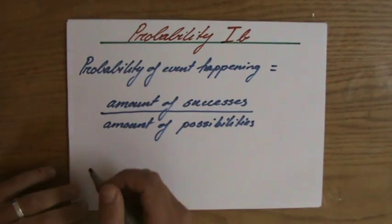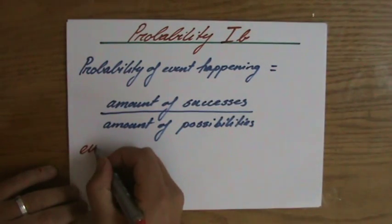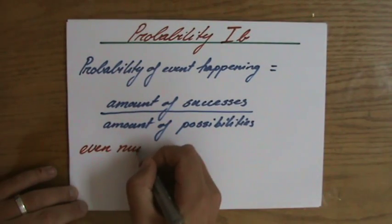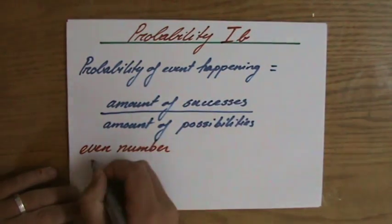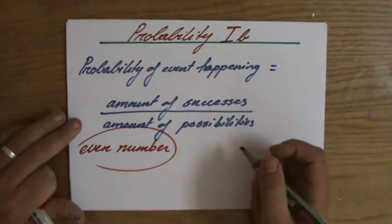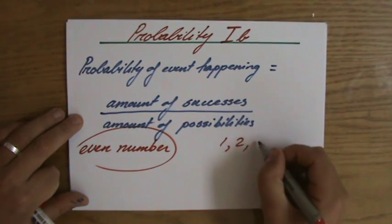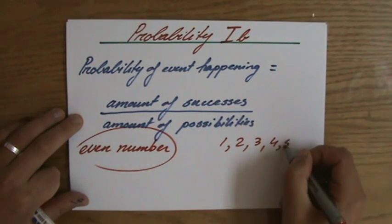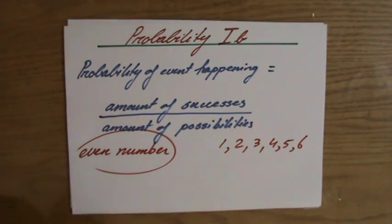I said, what is the probability of rolling an even number with a fair dice, an even number? Well, in a normal dice, and I don't have one here now actually, but you have, what are the numbers? You have one, a two, a three, a four, a five, and a six.